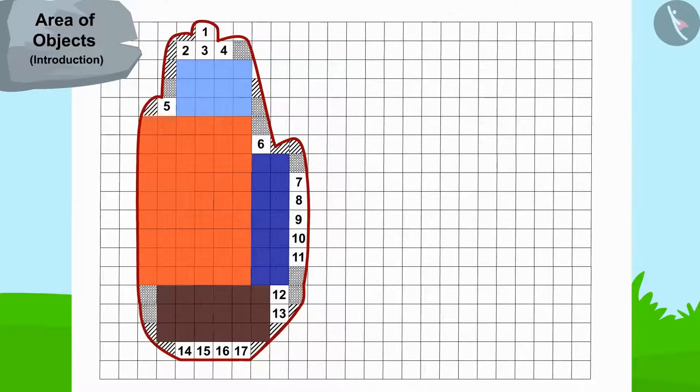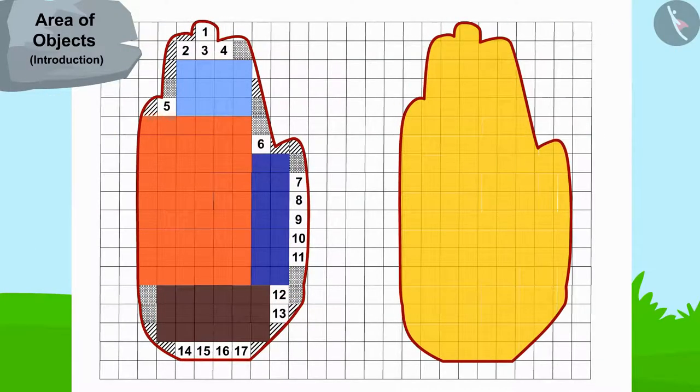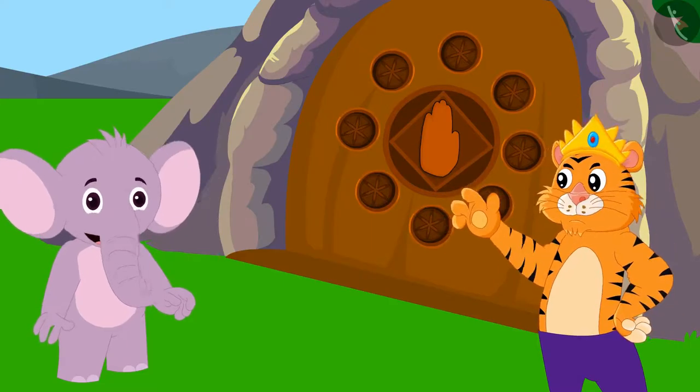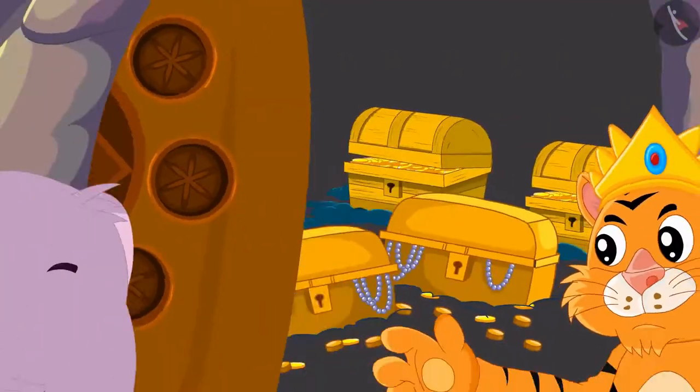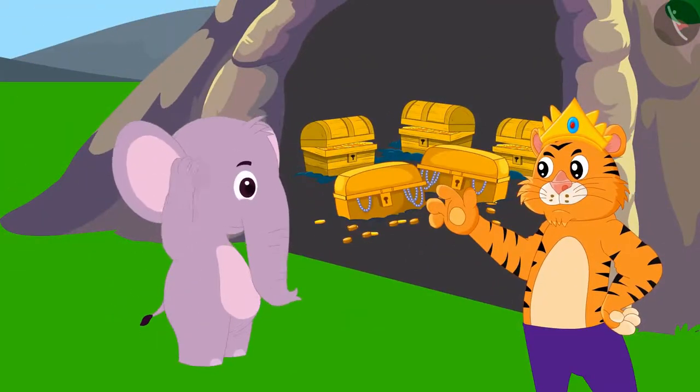Appu's hand impression matched the impression on the cave door. The king opened the door with Appu's help and gave him half of the treasure in return.